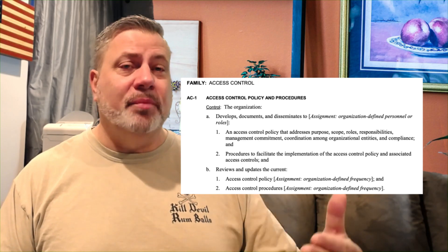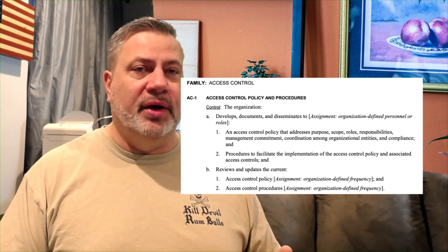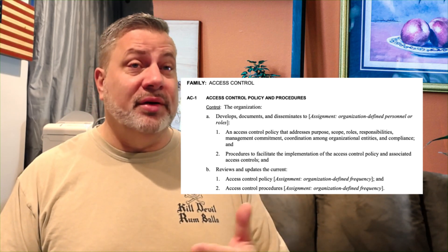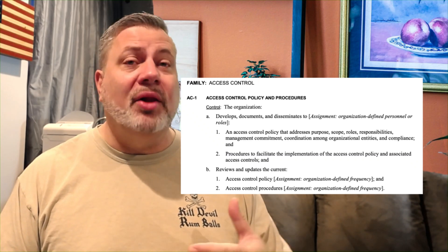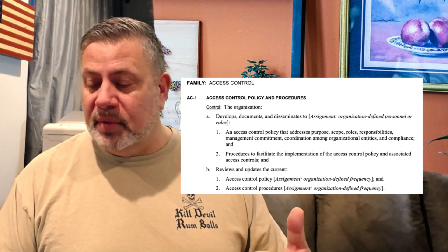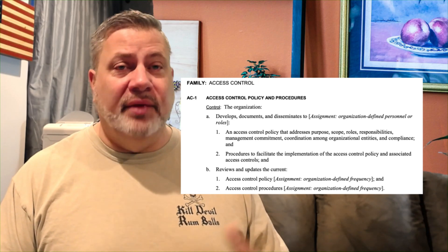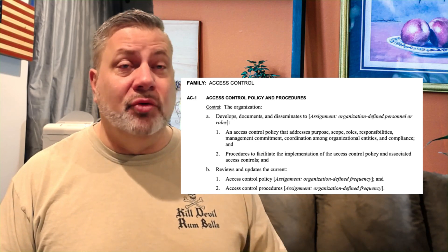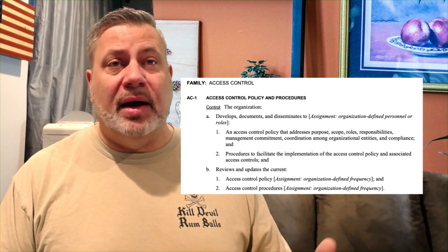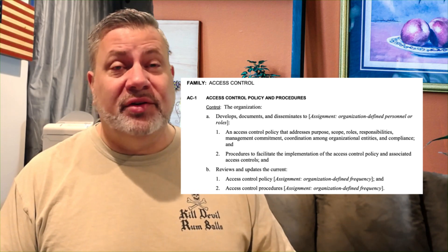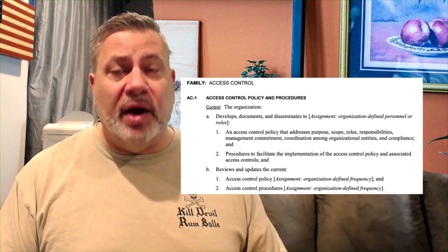The review frequencies are organizationally defined. The policy will be updated based on how often your organization wants to update it. Procedures will be updated normally at a higher frequency. If we look at things like FedRAMP or the way cloud computing within the government works, policies are updated about every three years and procedures are updated every year to keep them more fresh.